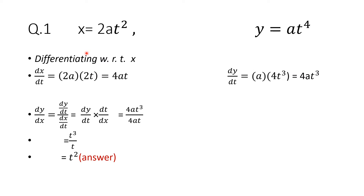The first question: x is given as 2at² and y is given as at⁴. Differentiating both sides with respect to x, we'll take the case of x first. dx upon dt — what is the derivative of 2at²? 2a as it is multiplied by the derivative of t², which is 2t. So dx by dt comes out to be 4at.